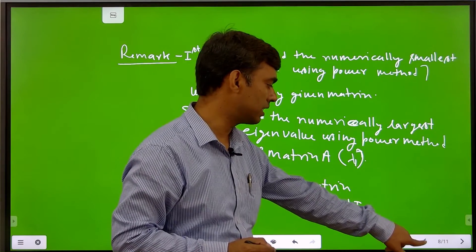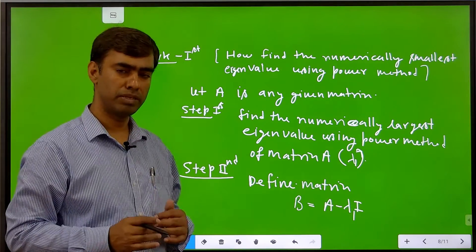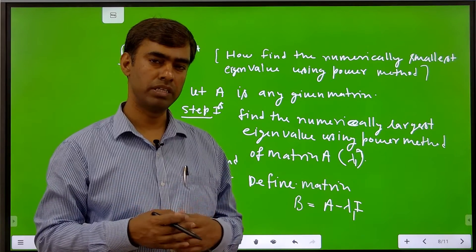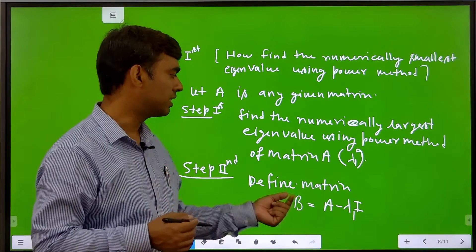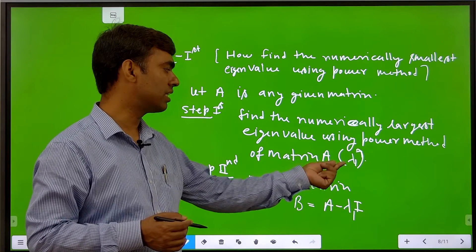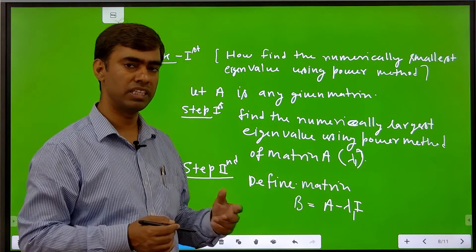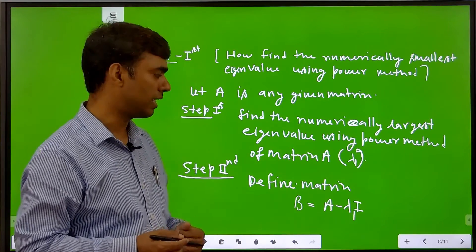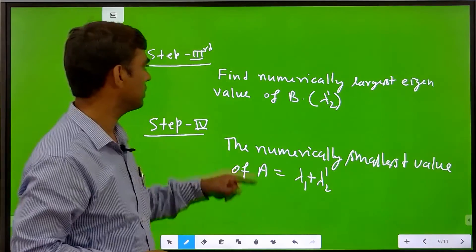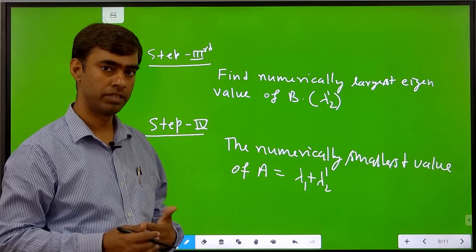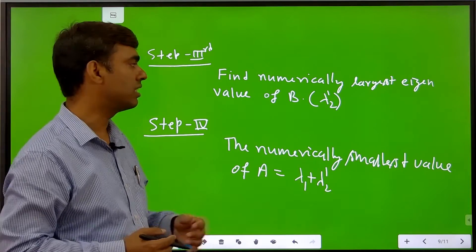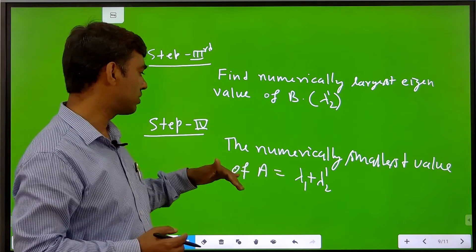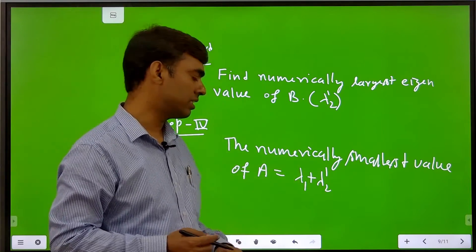To summarize how we find the numerically smallest eigenvalue: for a given matrix A, first find the numerically largest eigenvalue lambda 1. Then define a new matrix B equal to A minus lambda 1·I. Then find the numerically largest eigenvalue of B, call it lambda 2 dash. The numerically smallest eigenvalue of A equals lambda 1 plus lambda 2 dash.